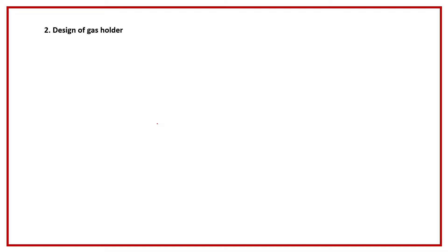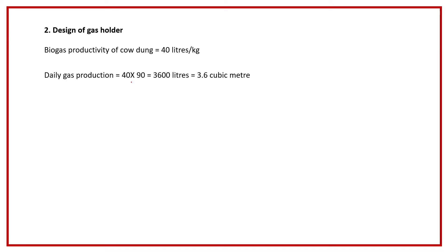Now we can move to the design of the gas holder. The first point is how much gas is produced per day. We are feeding 180 liters of feed material per day, of which only 90 liters is cow dung. The biogas productivity of cow dung is almost 35 to 40 liters per kg; we take 40 liters per kg. So daily gas production is 40 into 90, that is 3600 liters or 3.6 cubic meters.